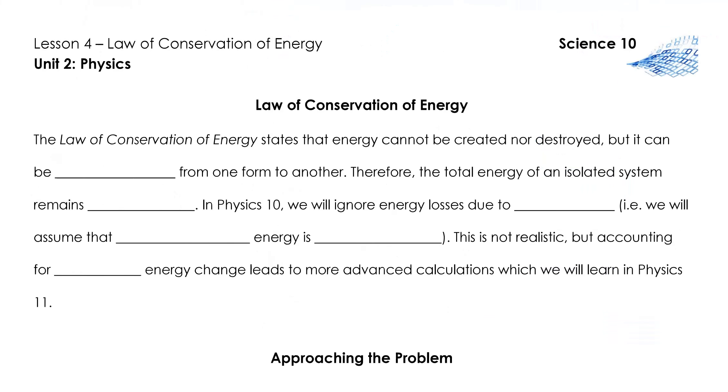As we learned in our previous lesson, the law of conservation of energy states that energy cannot be created nor destroyed, but it can be changed from one form to another. Therefore, the total energy of an isolated system remains constant. Energy is transformed from one type to another, but it's not lost. It doesn't vanish or go away.